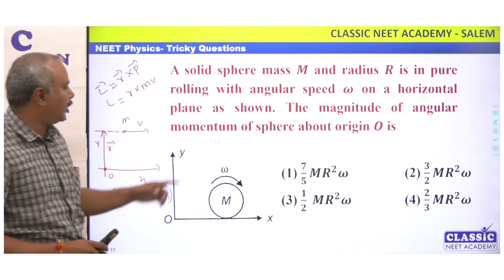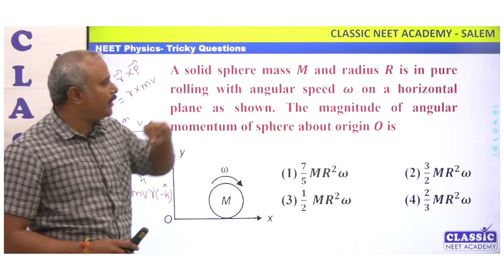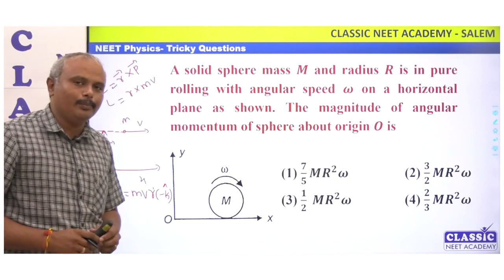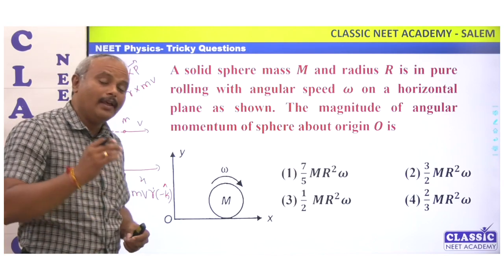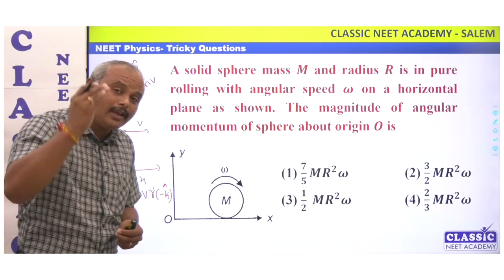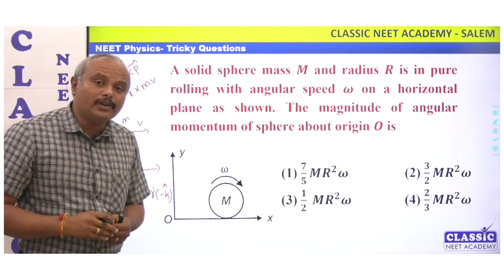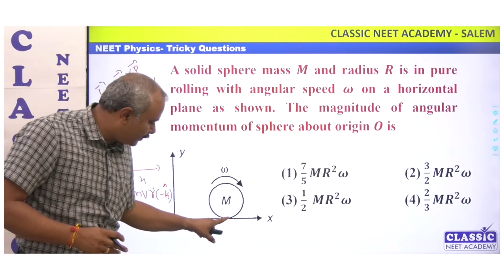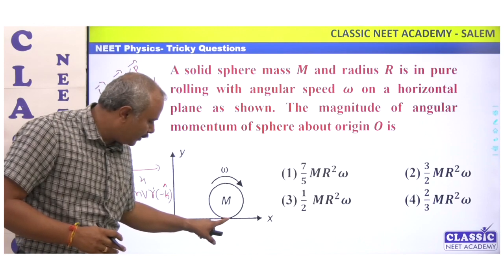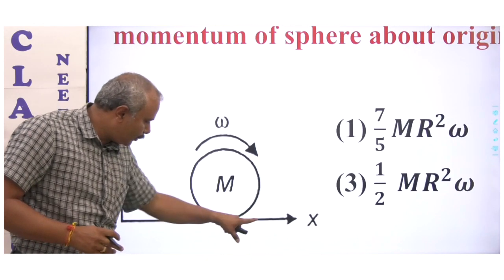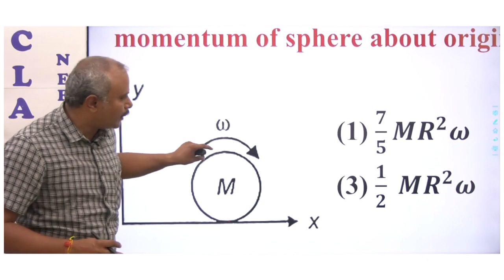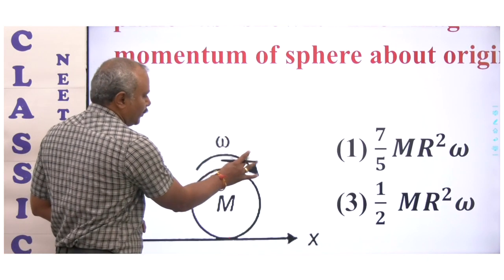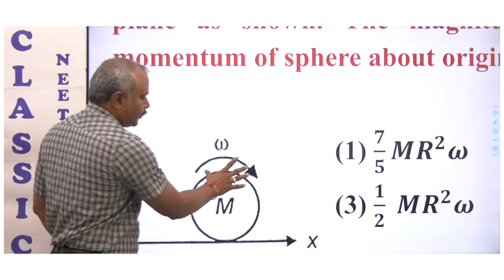Angular momentum is mvr, direction minus k-vector. This is the basic angular momentum. Now what we consider here: a solid sphere of mass m and radius r is in pure rolling. So center of mass velocity equals r omega — v equal to r omega. There is no relative motion between this point and the surface.